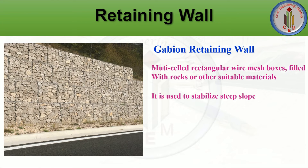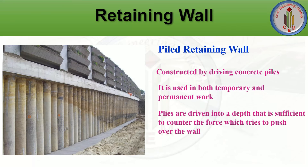The gabion retaining wall is also a form of gravity retaining wall. It is constructed using multi-celled rectangular wire mesh boxes filled with rocks or other suitable material. Gabion retaining walls are used to stabilize steep slopes and for the construction of erosion control structures.